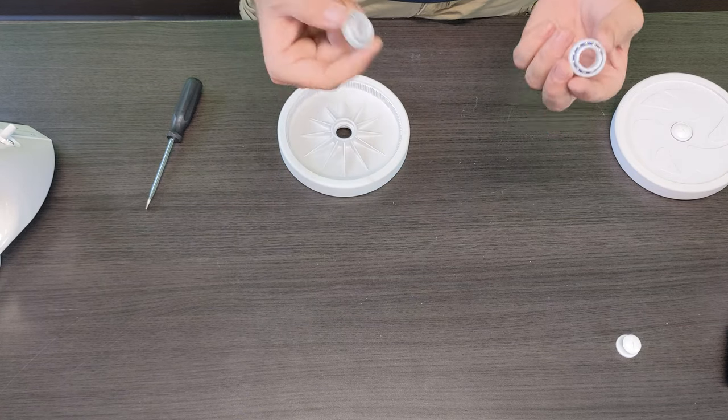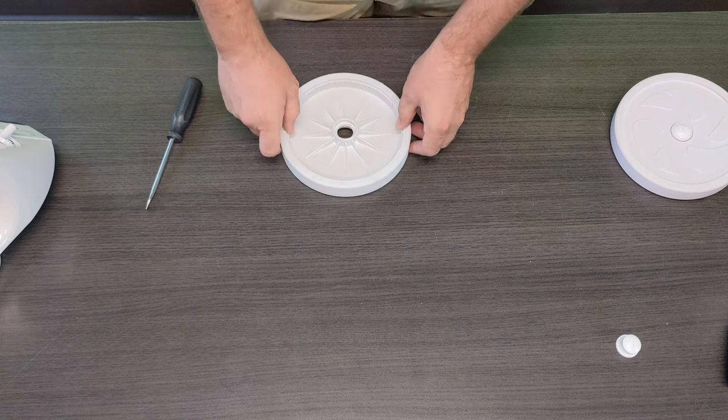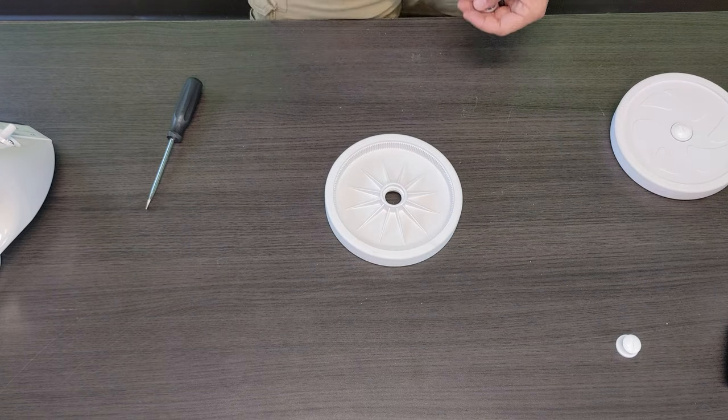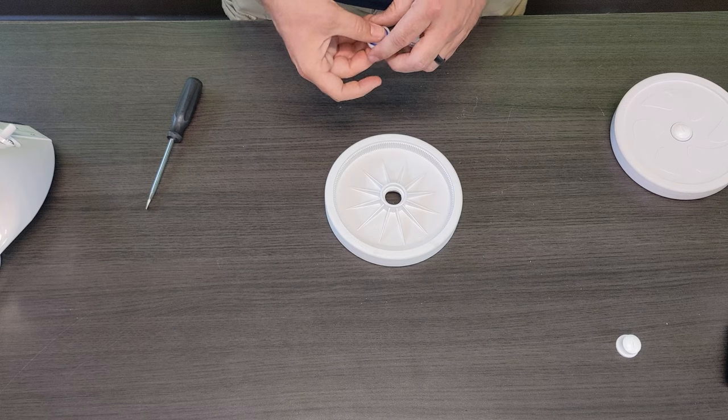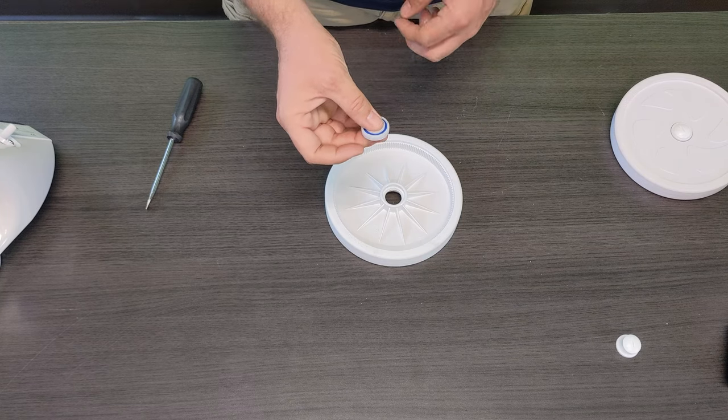Each tire like I said does come with two. Aside from the idler I believe the idler only has one just because it's a free spinning wheel there that doesn't actually require two of the bearings.